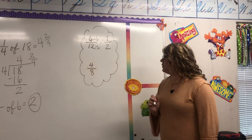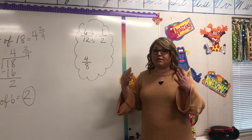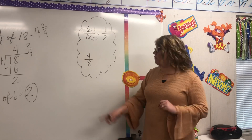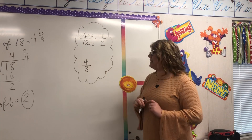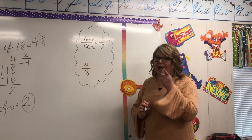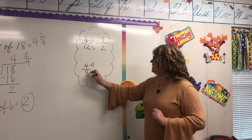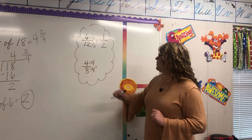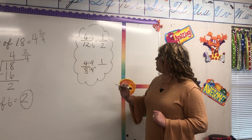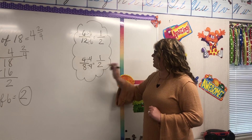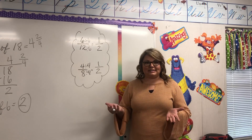And again here, look at the four and the eight. We just look for the largest number that will go into the numerator and the denominator. And in this case, four would be correct. Four goes into four one time, and four goes into eight two times. So one half again is our answer.